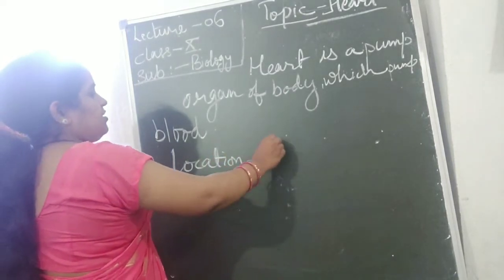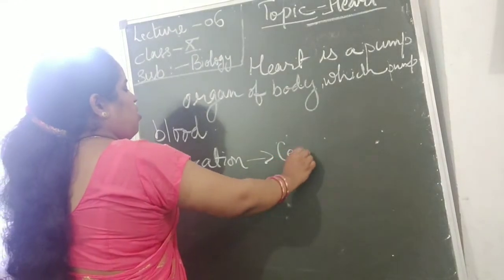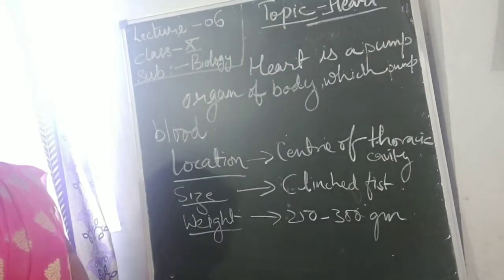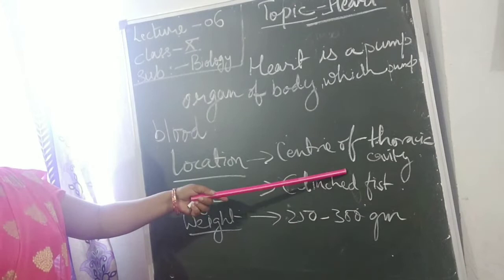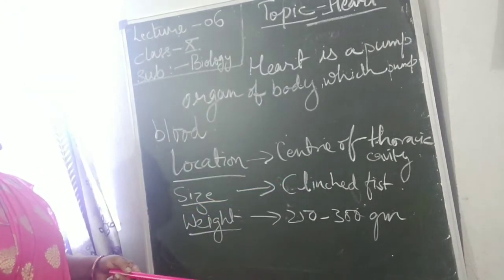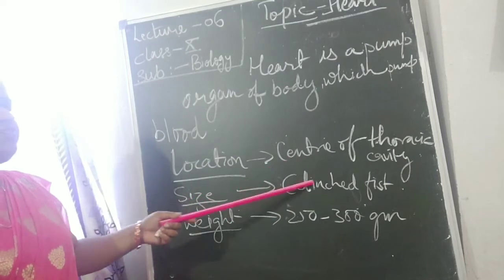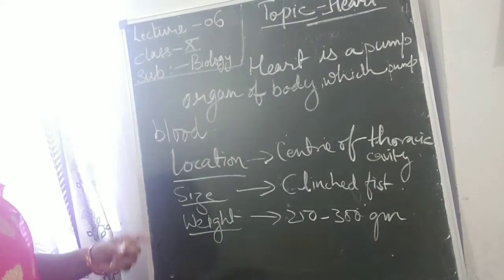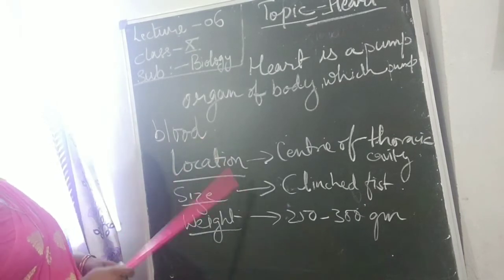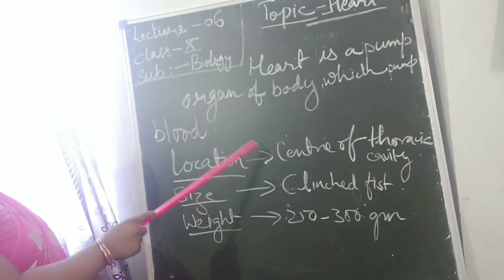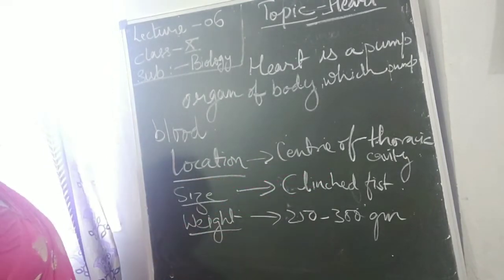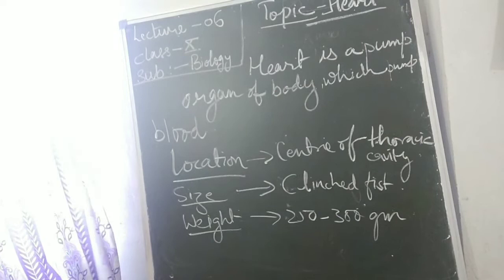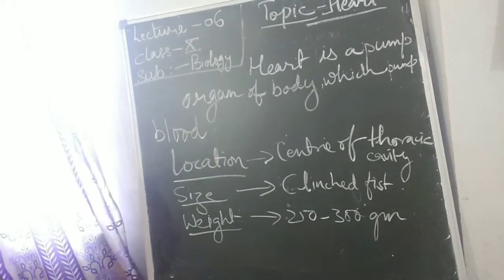First we will discuss the location of the heart. It is present in the center of the thoracic cavity, but it is slightly shifted towards the left side. Due to this shifting, the size of the left lung is quite smaller than the size of the right lung. The heart is an oval-shaped structure present in the center of the thoracic cavity, and it is surrounded and protected by the sternum bone.